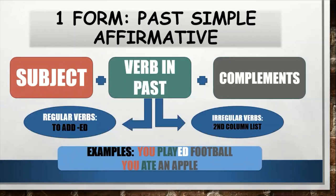The examples could be: you played football, or you ate an apple. The first example uses a regular verb — you played. 'You' is the subject, 'played' is the verb in past with -ed added, and 'football' is the complement. The second example uses an irregular verb, so we form the past with the second column of the list: you ate an apple. Do you understand it? Now let's explain the second form — past simple negative.